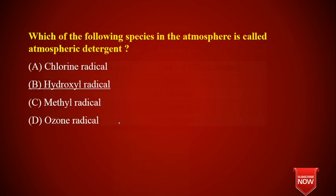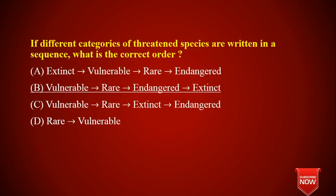Which of the following species in the atmosphere is called the atmospheric detergent? It is the hydroxyl radical. Chlorine species, methyl radical, and ozone radical are not the answer. The answer is hydroxyl radical, which is known as the atmospheric detergent.